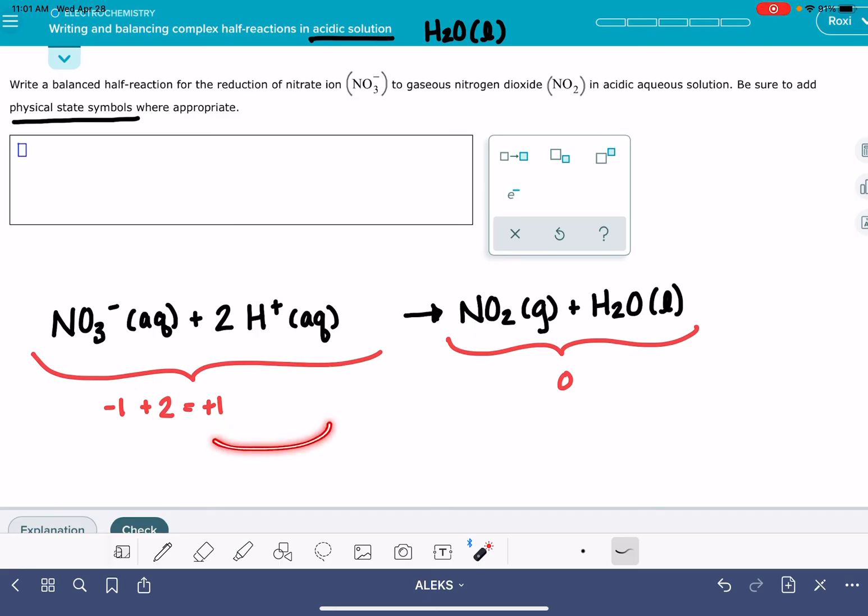And we're going to add electrons to this side, the side with the higher charge, to bring its charge down so that it matches the other side. So this means that we want to add one electron to the left-hand side. So that will bring the charge on the left-hand side down to zero so that they both match.